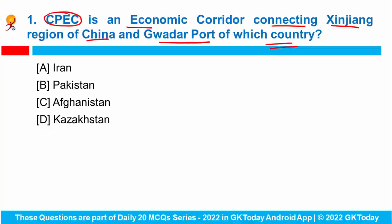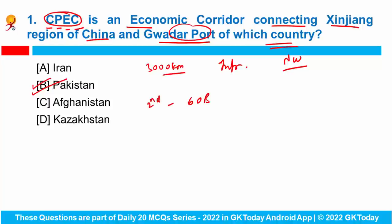This term stands for China-Pakistan Economic Corridor. It is a 3,000 km long route of infrastructure projects that connects China's Northwest Xinjiang Autonomous Region and Gwadar port in the western province of Balochistan, Pakistan. Pakistan recently signed a new agreement with China to begin the second phase of the 60 billion dollar China-Pakistan Economic Corridor. That's why it was in news.